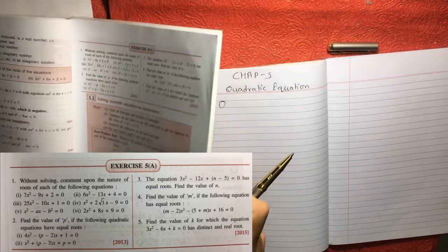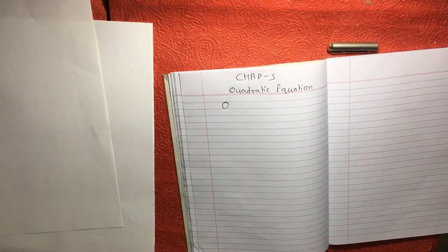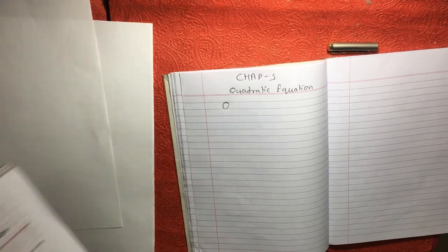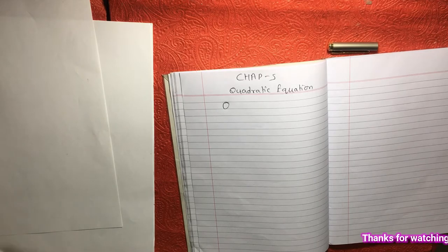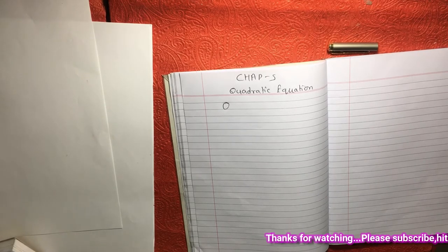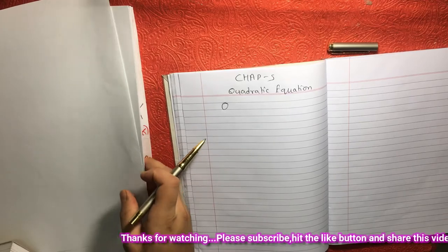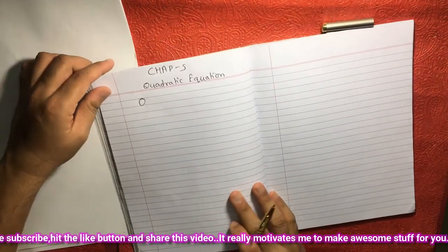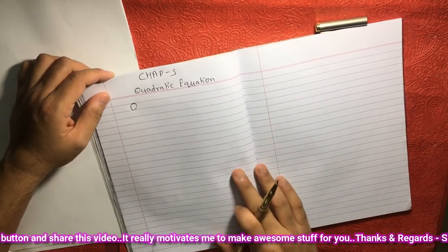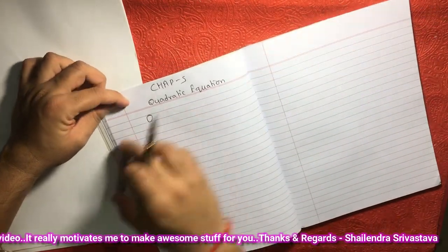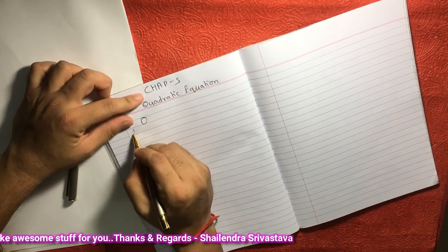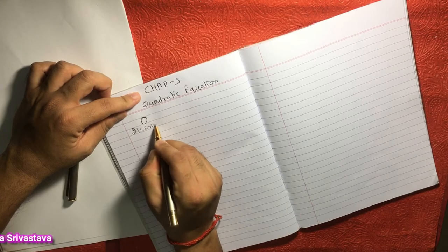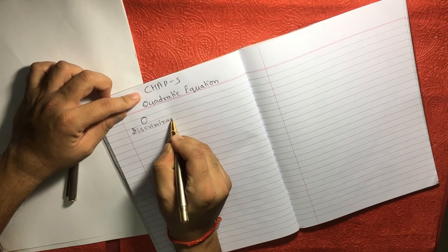Before I start this exercise, I want you to understand few things. For example, you must know what does it mean by the discriminant. There is a formula B square minus 4AC that you need to understand and know when and in what condition we are going to use that formula. So there is a term called discriminant.